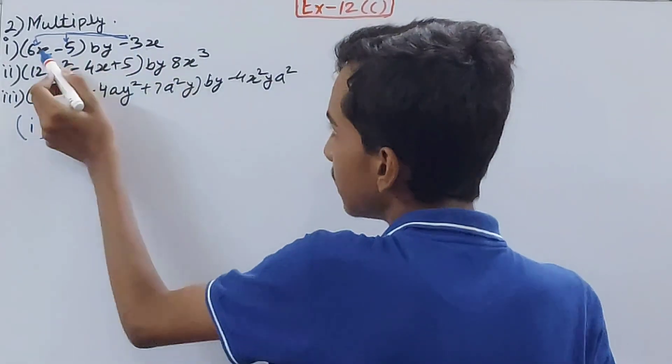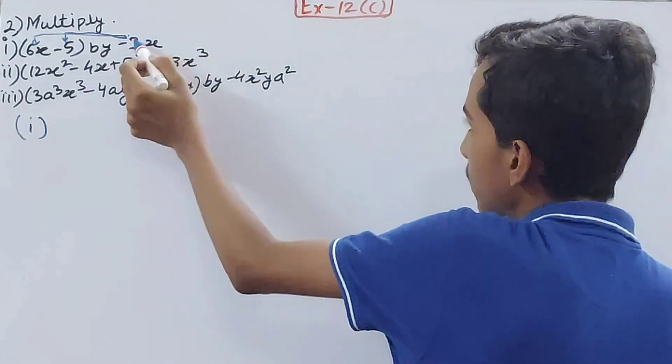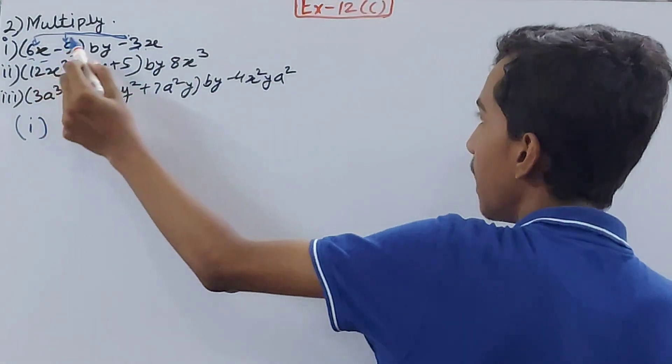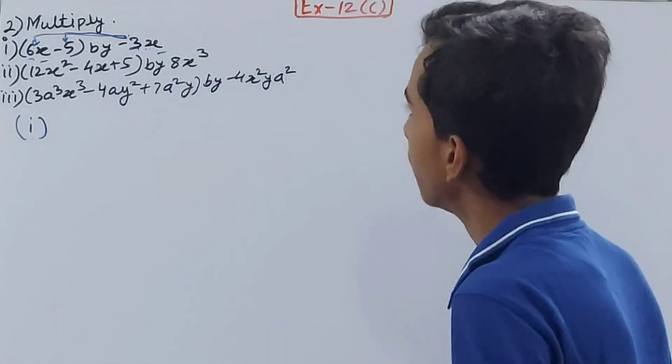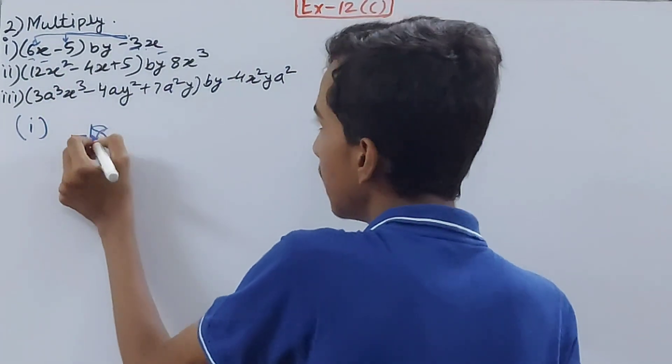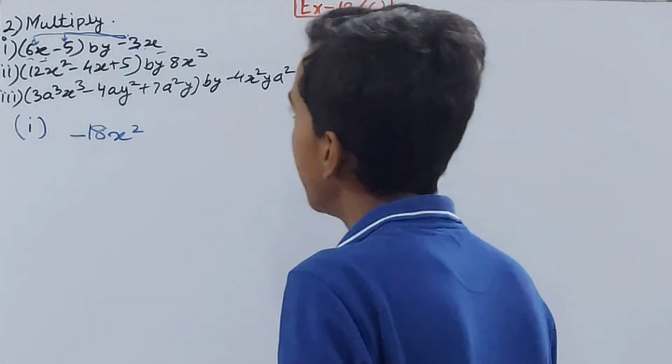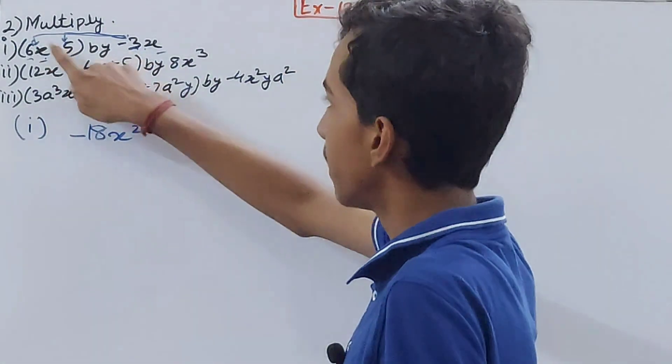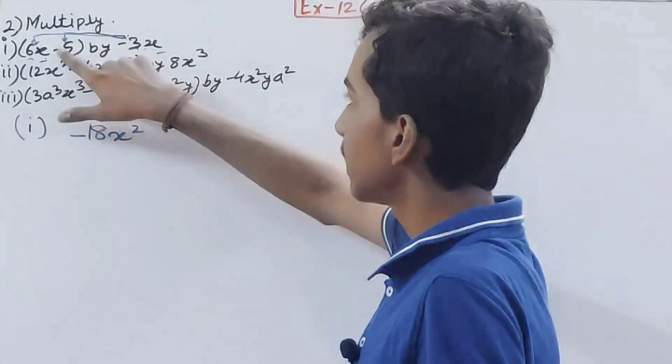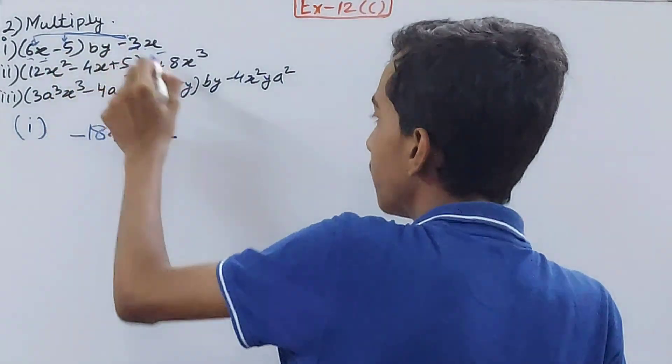-3x into 6x: multiply constants separately and variables separately, then join them together. So -3 into 6 becomes -18, x into x gives x². Now multiply with -5: -3x into -5 gives plus 15x. That becomes your answer for the first one.